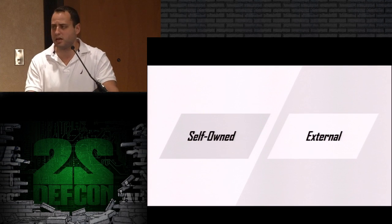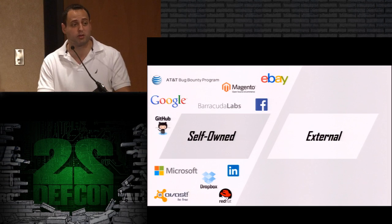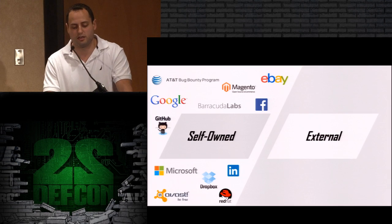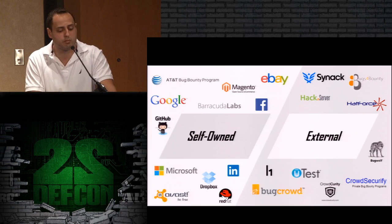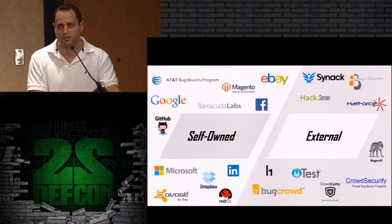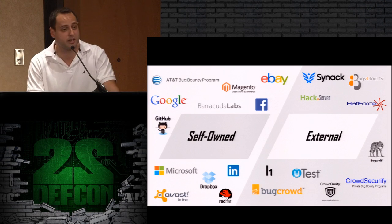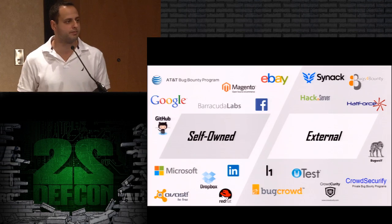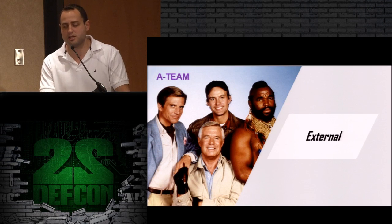Let me split bug bounty programs into two: self-owned and external. There are many companies that created bug bounty programs for themselves — you can see a nice list, and there's a more extended list on BugCrowd's website. The external ones are companies that actually provide the service of creating a bug bounty program. Let me explain a little about external companies, because the self-owned are what enterprises can afford. External ones are for the rest. One thing I saw on one of these external companies is that they can build an A-team — an elite team of pen testers.